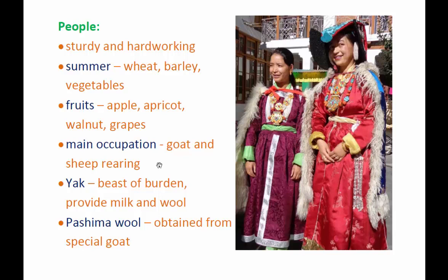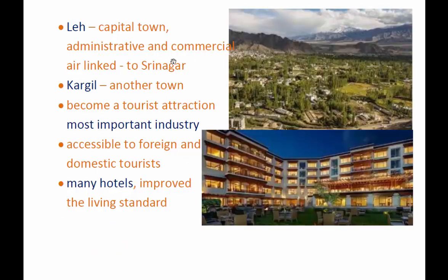They also use the young ones as beasts of burden; they provide milk as well as wool — Pashmina wool, which is obtained from a special goat and is very popular and important. Leh is the capital town of Ladakh, and Kargil is another town that borders with Pakistan. Leh is an administrative and commercial town, and it is linked by air to Srinagar, which is the capital of Jammu and Kashmir.